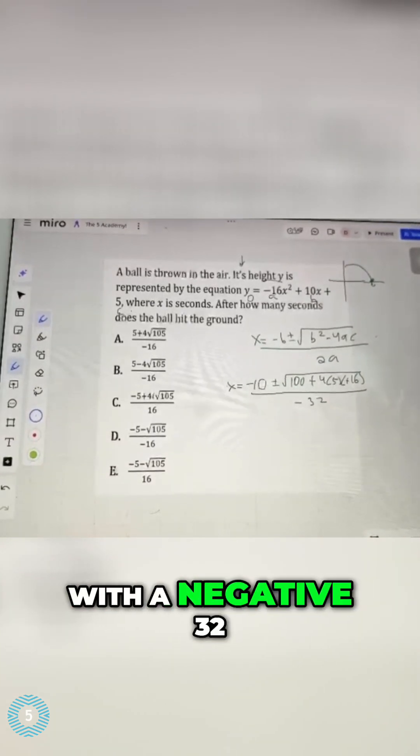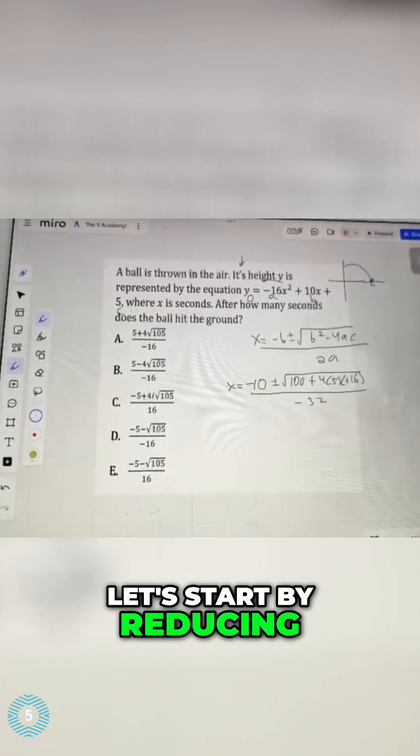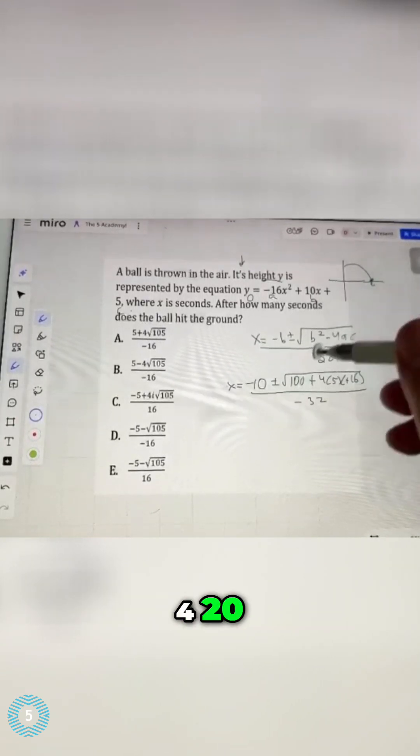Now, I don't see anywhere with a negative 32, which means eventually I'm going to have to reduce. Let's start by reducing what's underneath the square root. I'm going to get 420.